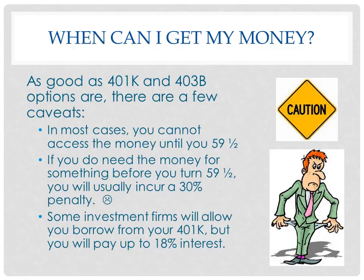When can you actually get your money? In most cases, you cannot access your money until you are 59 and a half. If you need the money before then, you can incur a penalty of up to 30%. Some investment firms will allow you to borrow against your 401k, but you pay 18% interest at times. You must be very aware that if you need to save money for other things such as a house or your kid's college education, there are other investment vehicles not related to retirement that you can start investing in.